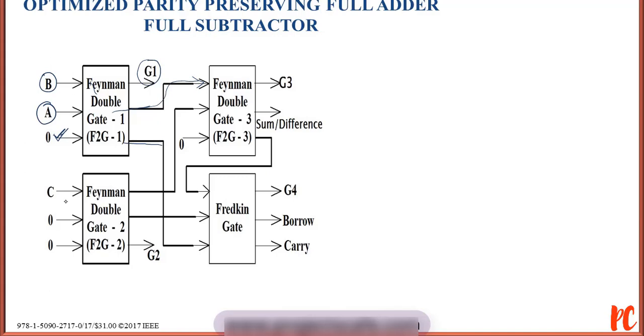For the second Feynman gate, a triplicate of Cin is used, putting two zeros as constant values with Cin at input. One output of Cin will access a garbage value, and remaining two are fed to one part of the Feynman gate and other part of the Fredkin gate.